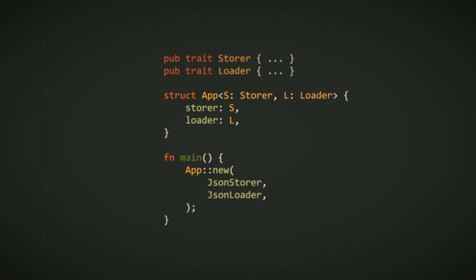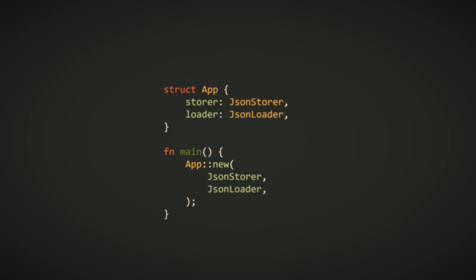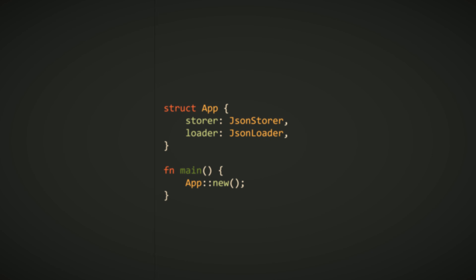We started with good intentions: make the app flexible by allowing different persistence objects. But along the way we built something that invites misconfiguration. In this video we will see how we ended up here and how the abstract factory pattern can fix the problem. And if you already know about the abstract factory pattern, stick around anyways, because we'll discuss different ways to implement it in Rust and discuss the tradeoffs.